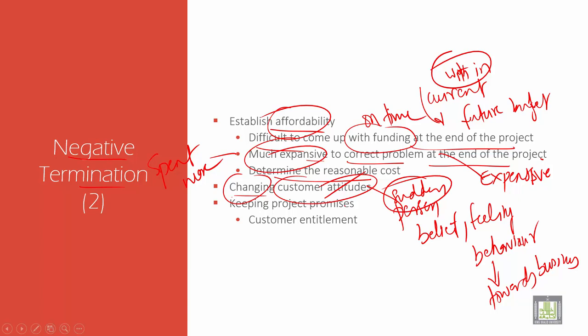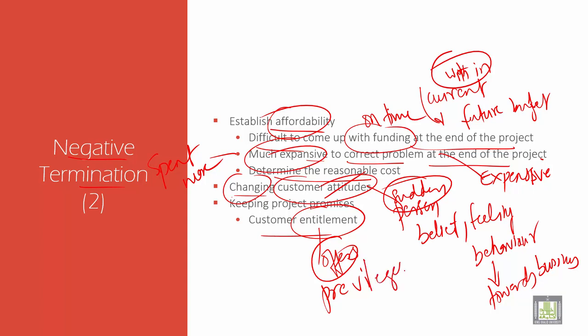Keeping project promises: you should keep the promises and keep the customer entitlement. Entitlement refers to the privileges granted to users when accounts are first created and during the life of the accounts — giving some offers or privileges to the users. You should maintain those promises till the end, as offers given should be maintained full time.